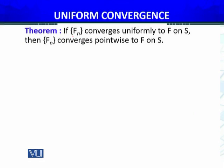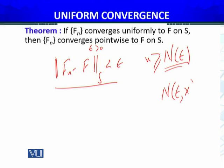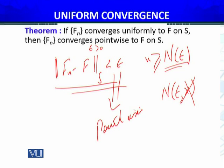So, we have a theorem which states that if fn converges uniformly to f on S, then fn converges pointwise to f on S — kyunke ||fn - f|| over the set S less than epsilon for every epsilon greater than zero. We have this inequality whenever n is greater than or equal to N of epsilon. A pointwise convergence — of course, point uniform convergent — agar koi sequence of functions hai, toh pointwise convergent bhi hoga, uski pointwise convergence bhi hogi, because pointwise convergent mein ye N joh hai, wo zaroori nahin hai sirf epsilon pe depend kare — it may depend upon x — lekin x pe depend na kare, tab bhi ye satisfy hoga. Toh uniform convergence implies pointwise convergence.